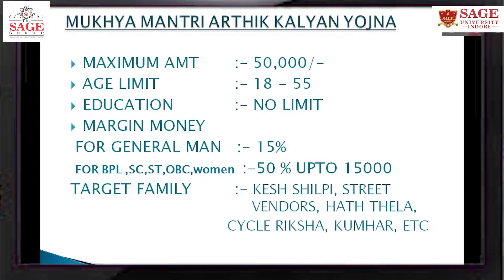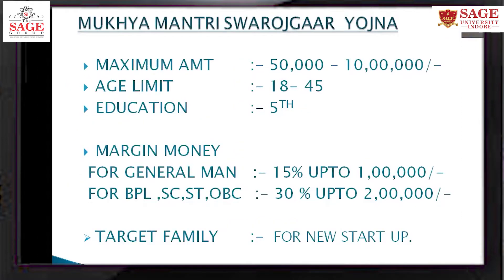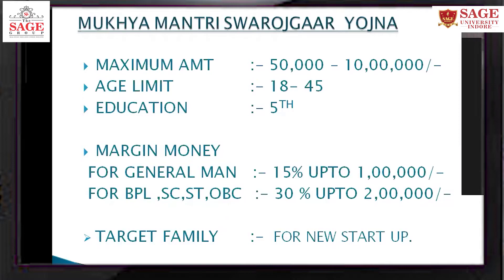The main major benefit is the interest subsidy. The margin money is 15% for the general category and up to 50% for others. The interest subsidy from the government is 6% to 5%. For other categories like BPL, ST, OBC, they will get 30% interest subsidy, up to 2,000. So if you apply for 10,000, you get 2,000 back in subsidy.